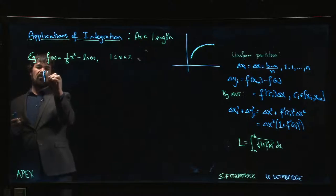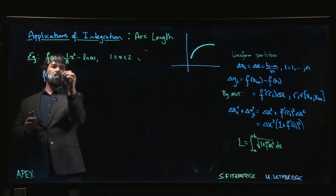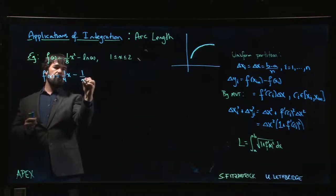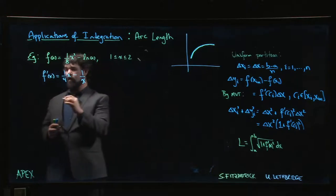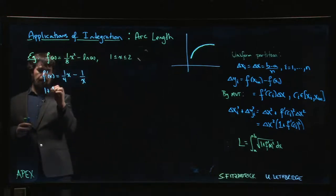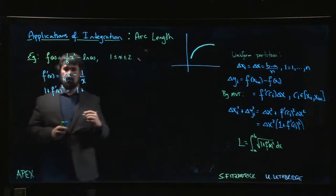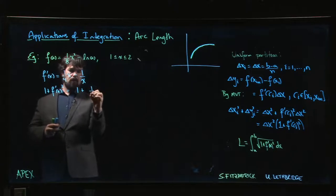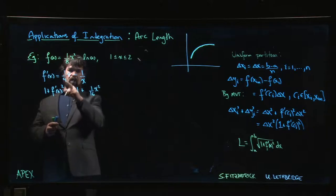So let's look at this particular example. f'(x) we get 1/(4x) - 1/x, and we want to square it and add 1. So 1 + f'(x)^2, we have 1 plus—so what are we going to get? We're going to get 1/(16x^2).